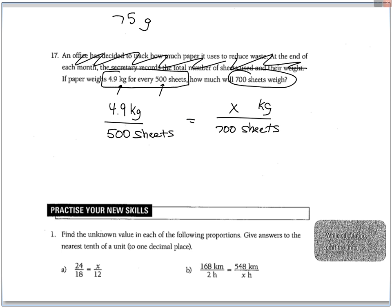Actually that was fairly ugly. Change to a pen, cross-multiply like this. So 700 times 4.9, dividing 500. It's 6.86 kilograms.